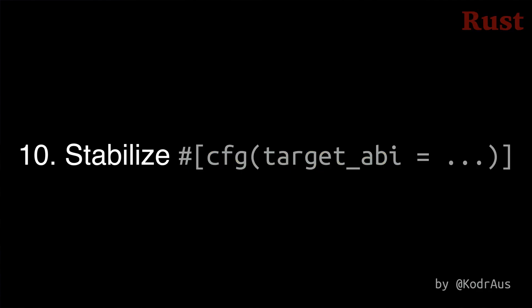Number 10: Using the cfg attribute to configure the target ABI is now stable. This has been in the works since 2020. You can now write code conditioned on the ABI for targets with multiple ABIs without having to use a build script. For example, this makes it easier to write code conditional on whether an iOS target is using the simulator ABI or the physical device ABI.